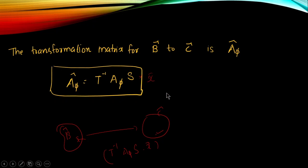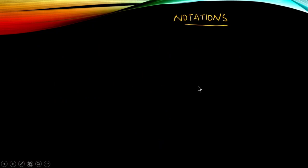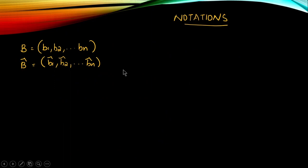So the steps are: first apply transformation S to get the vector in basis B, then apply φ on that vector to get it in basis C, then apply T⁻¹ to get it in basis Ĉ.